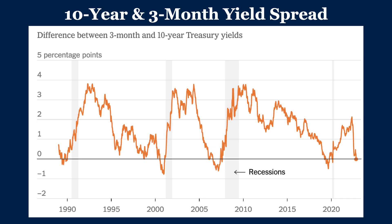I've followed him off and on for 15 years or so, and he's been on point with all the major turns. He now thinks we're in a secular bear market for the S&P. According to his data — looking at the last eight recessions and yield curve inversions between the three-month and the 10-year — the average lag between the inversion and the recession is nine months, and the median is eight months.